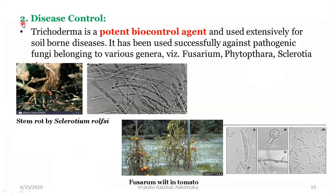The second benefit is disease control. Trichoderma is a potent biocontrol agent used extensively for soil-borne diseases. It has been used successfully against pathogenic fungi belonging to various genera like Fusarium, Phytophthora and Sclerotia. This pic shows corrosion causing stem rot. This is Fusarium — and these are tomato plants attacked by Fusarium causing Fusarium wilt disease in tomatoes.